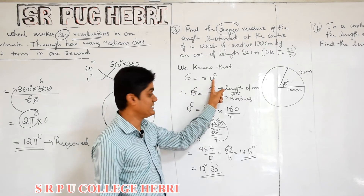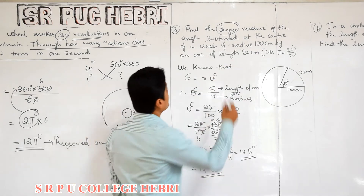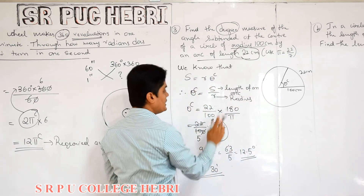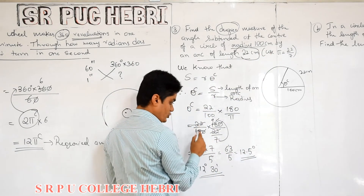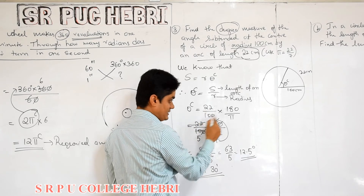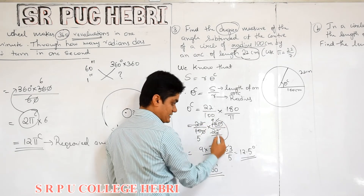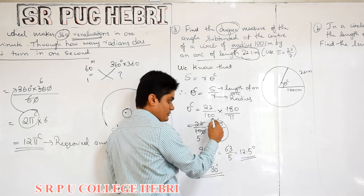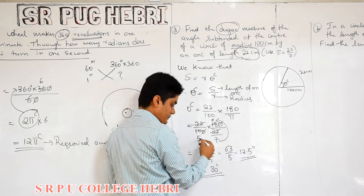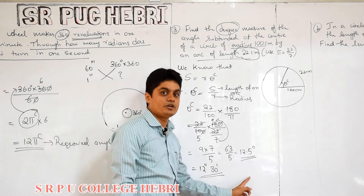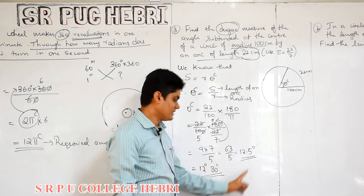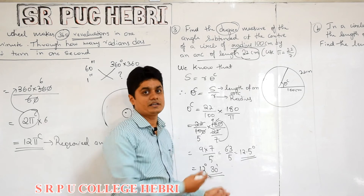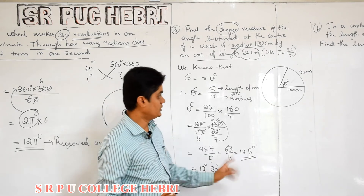I hope you understood. S equals R theta radian; theta equals S by R. Length of the arc is given as 22 centimeter, radius is also given as 100 centimeter. Just substitute and use pi equal to 22 by 7. The 22s cancel, giving 63 by 5, which is 12.5 degree, written as 12 degree 30 minutes. When you have a fraction degree, write in minute and seconds.